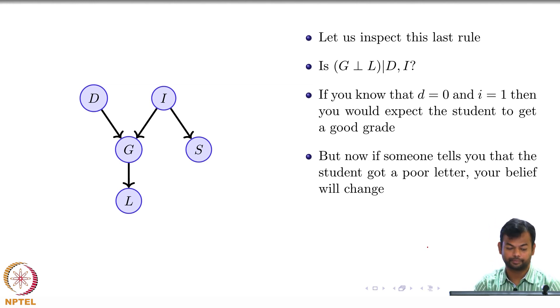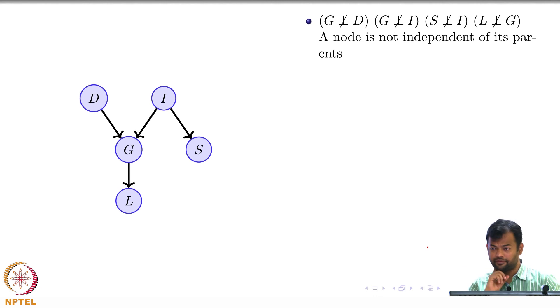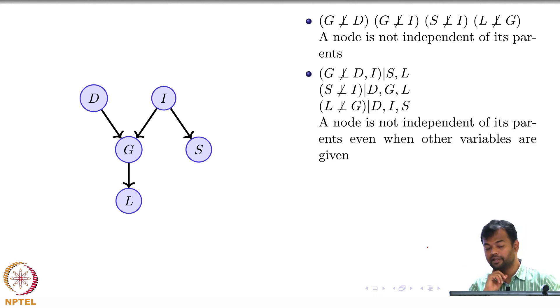What is the rule that is coming up here? The first rule is fine: a node is not independent of its parents even when other variables are given.